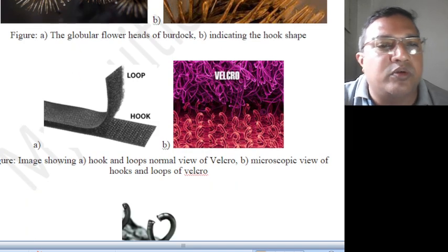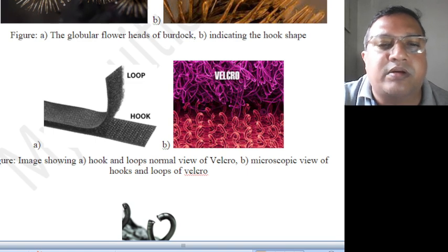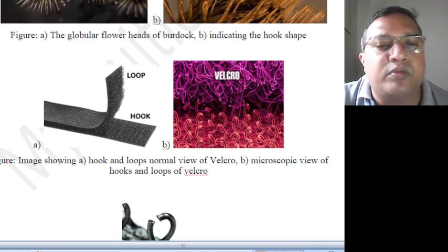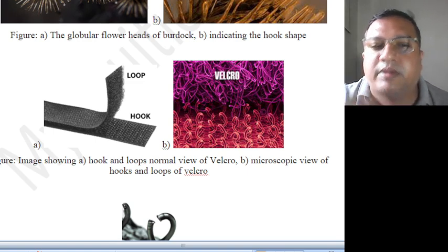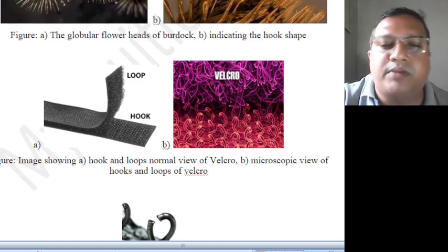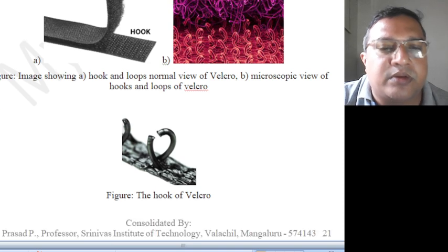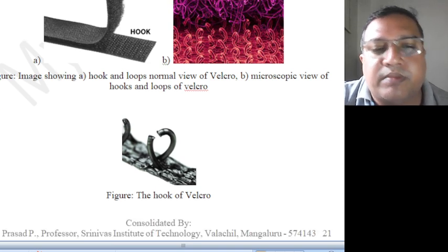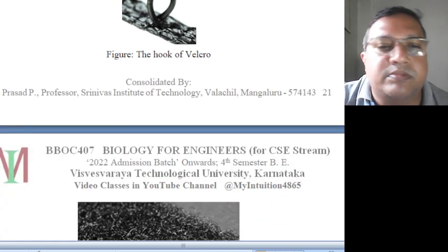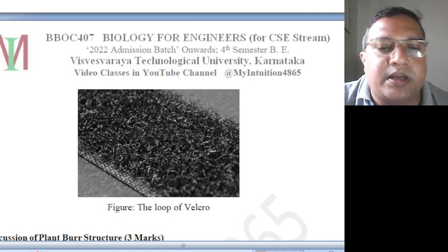So you can see the loop-and-hook mechanism — this is the concept of Velcro. The hook is there; when the loop comes, it will bind it. When forcefully you pull it, it will come out. So the hook of Velcro — this type of material is needed — and the loop of Velcro, which will go and hold.